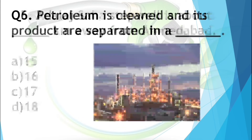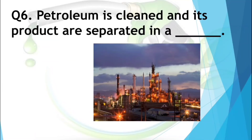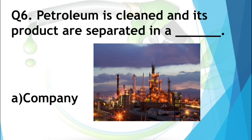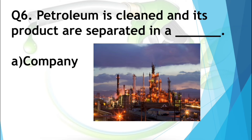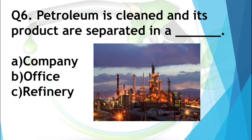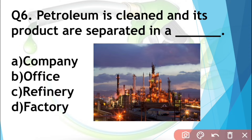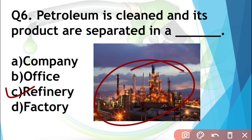Question number six: Petroleum is cleaned and its products are separated in a dash. Options are company, office, refinery, or factory. Petroleum products are cleaned in a refinery, so the answer is refinery. You can also see it in the picture — it is a refinery.